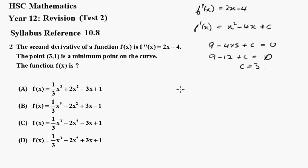So putting that back in, we get f'(x) equals x squared minus 4x plus 3. Now integrating again, we get f(x) is equal to 1 third x cubed minus 2x squared plus 3x plus some constant.